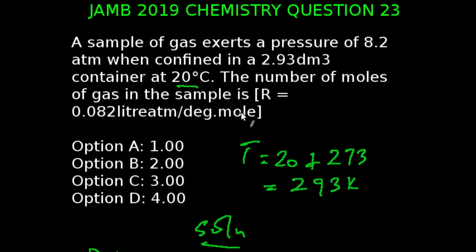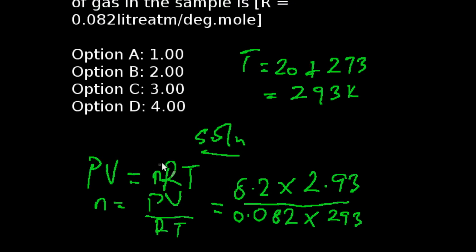Question 23 of JAMB Chemistry 2019. A sample of gas exerts a pressure of 8.28 when confined in a 2.93 dm³ container at 20 degrees Celsius. The number of moles of gas in the sample is. We're going to be using the ideal gas equation, which is PV is equal to nRT, where n is our number of moles, P is pressure, V volume, R is our universal gas constant, and T is temperature.